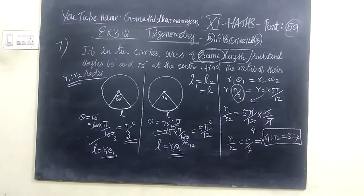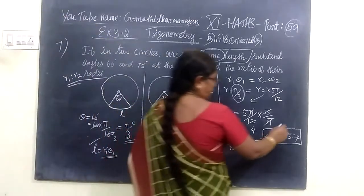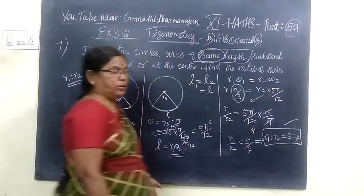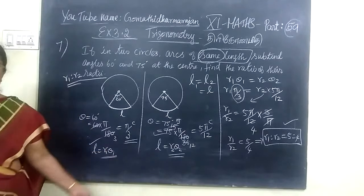So this is the 7th question, exercise 3.2, question 7. r1 is to r2 equals 5 is to 4. So this is the correct answer and we will see the next video in the next class. Thank you.